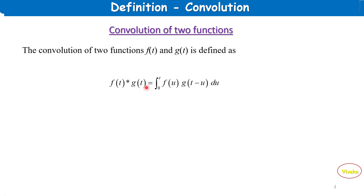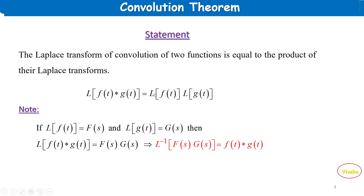The convolution theorem statement: The Laplace transform of the convolution of two functions is equal to the product of their Laplace transforms. That is, L{f(t) * g(t)} = L{f(t)} · L{g(t)}. Note: L⁻¹{F(s) · G(s)} = f(t) * g(t).